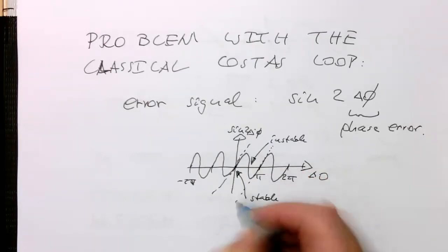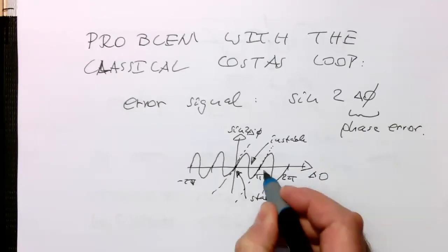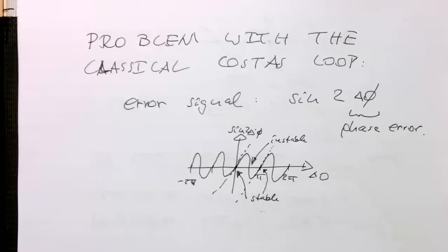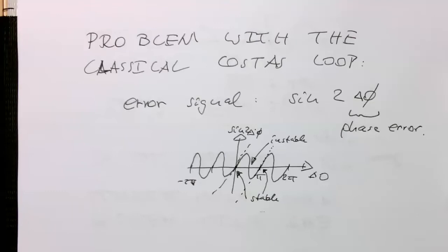Now we've got the problem here that at pi, this is also stable. So the problem with the Costas loop is that the Costas loop locks on 0 degree or 180 degree.